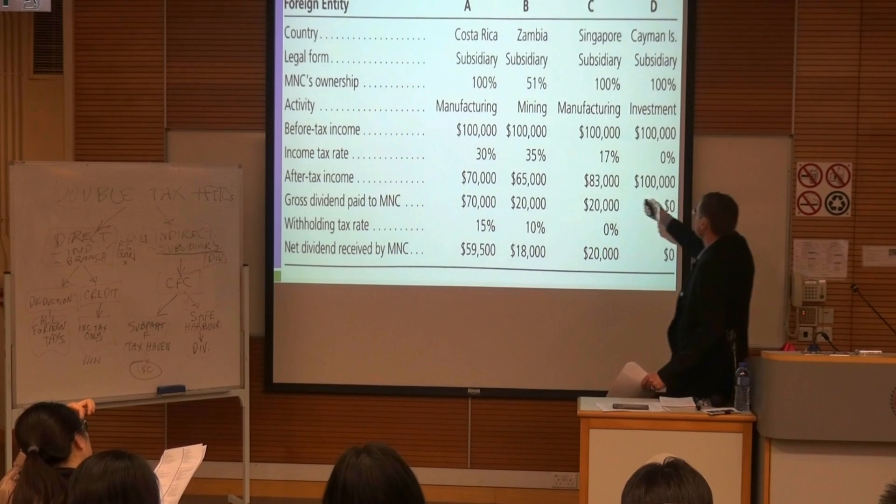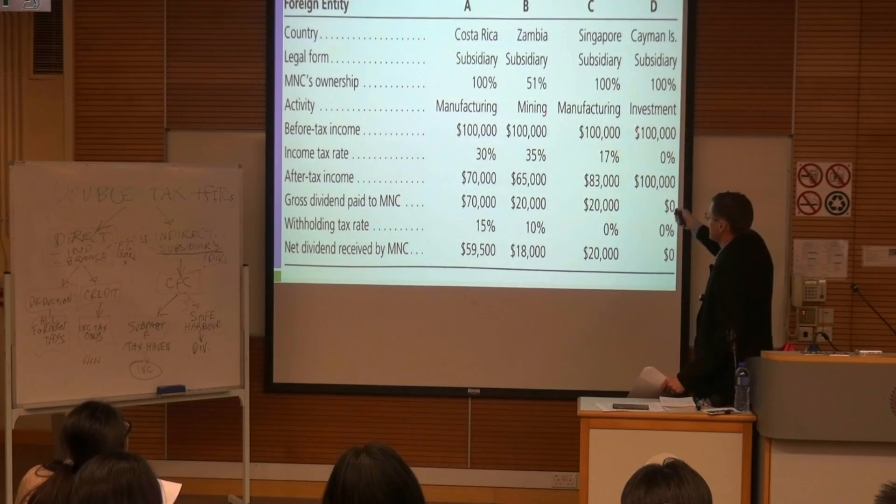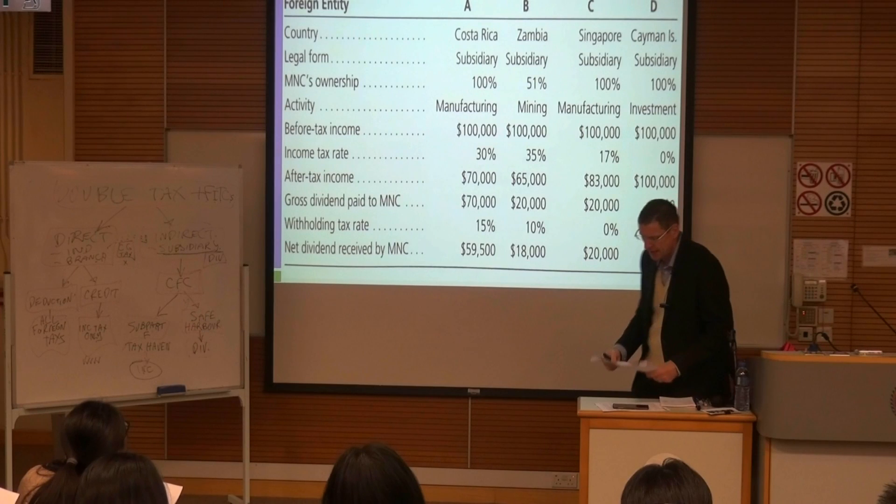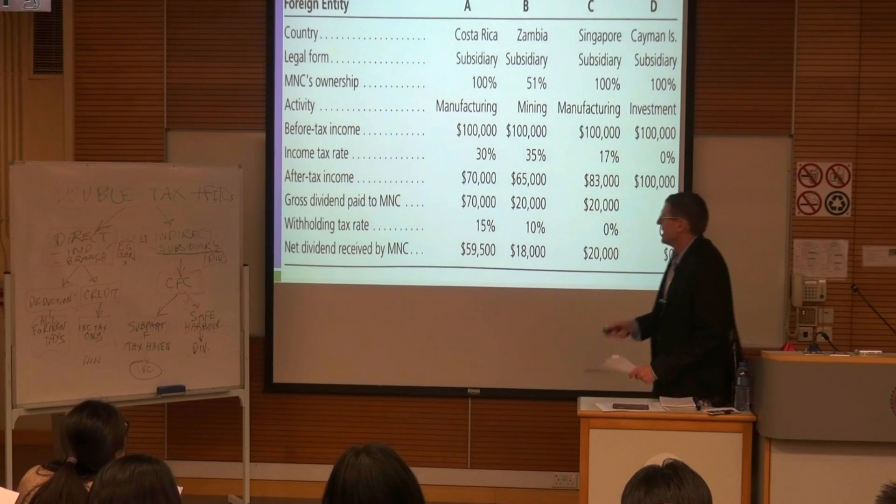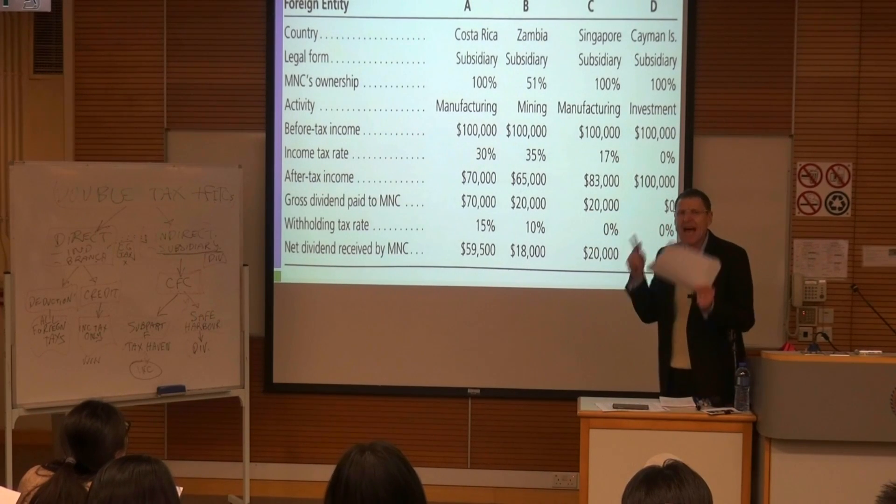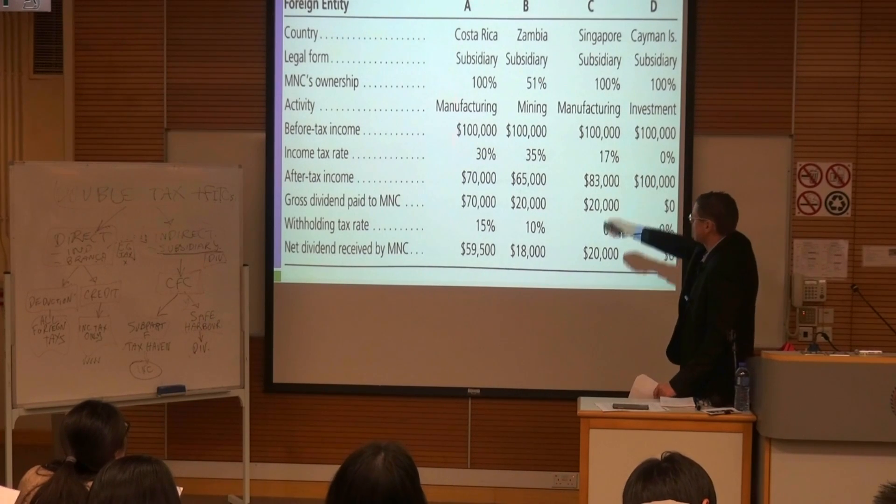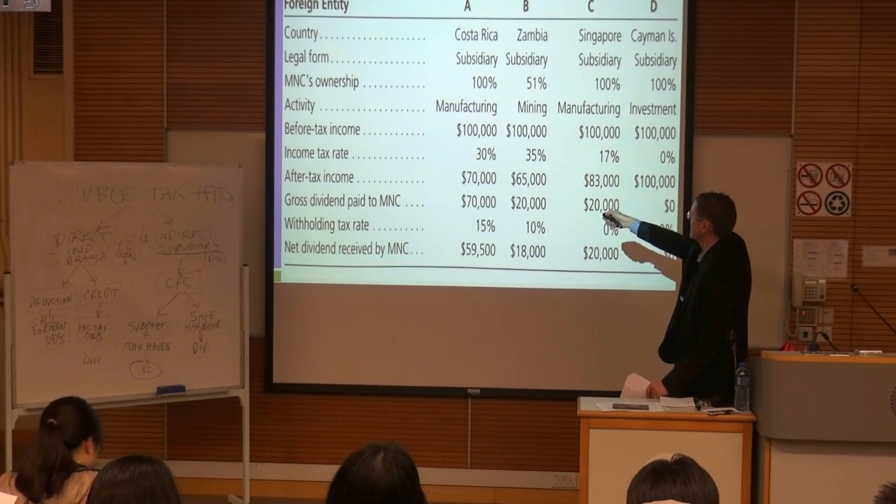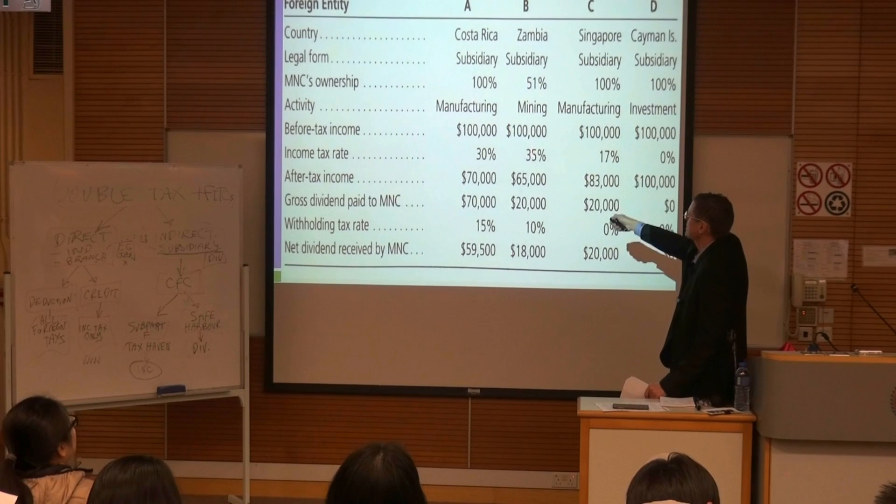Manufacturing, mining, manufacturing, investment. Some of these are good, some are bad because there's different types of definitions of safe harbor. Immediately A and B are safe harbor: number one manufacturing, number two...